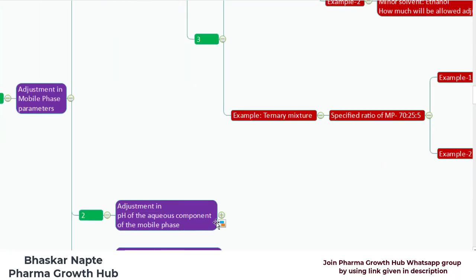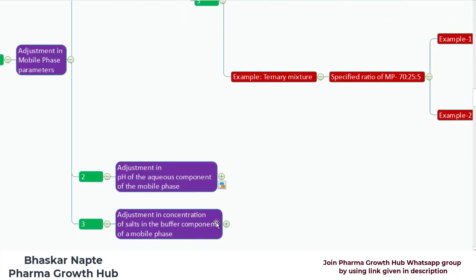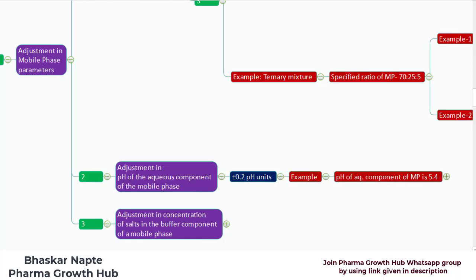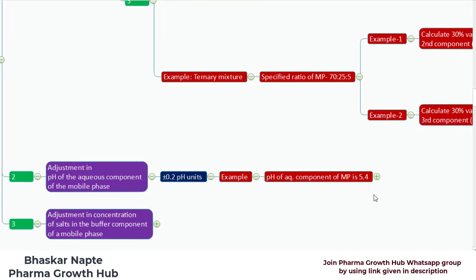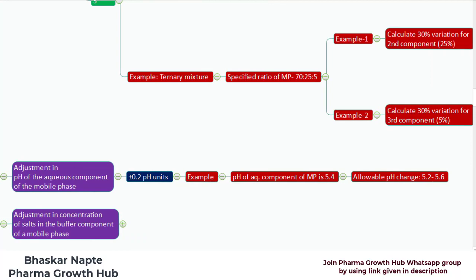The next point is adjustment in the pH of the aqueous component of the mobile phase. You are free to make an adjustment of plus or minus 0.2 units. For example, if the pH of your mobile phase is 5.4, you are free to make the pH change from 5.2 to 5.6.